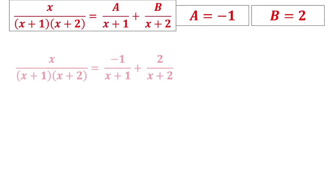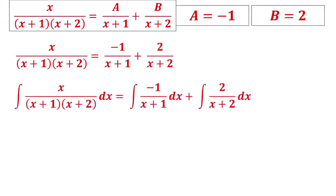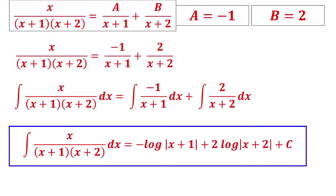With A = -1 and B = 2, we write: -1/(x + 1) + 2/(x + 2). You can verify by taking the LCM on the right-hand side and checking you recover the original expression. Now integrating: using ∫dx/x = log|x|, the first integral is -log|x + 1| and the second is 2·log|x + 2|. When linear factors are in the denominator, the answer involves logarithms, so be careful while finding A and B.